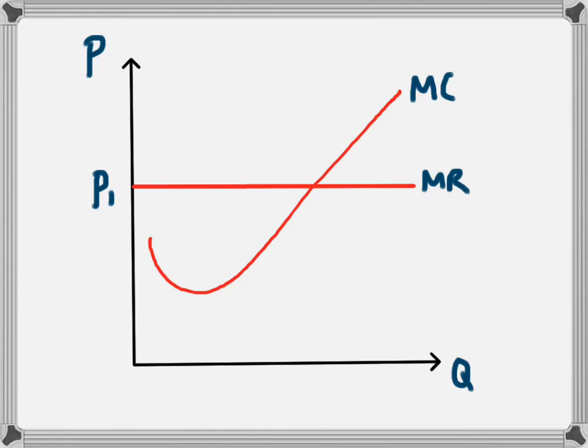So that means for every additional product they sell they get extra revenue, or they get the marginal revenue just equal to that price which is charged, and we end up with a line that looks like this.